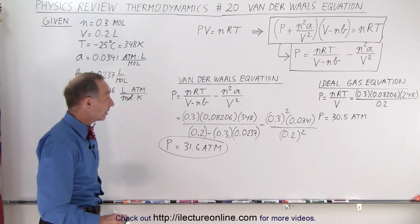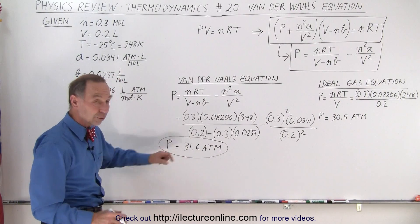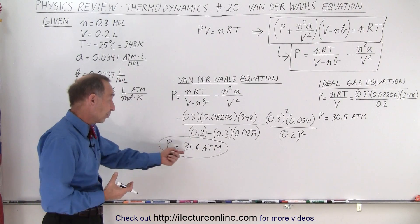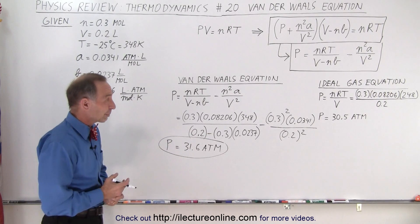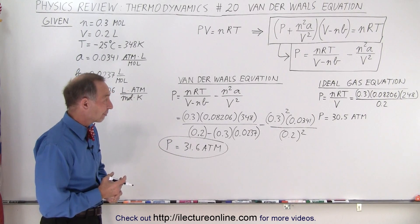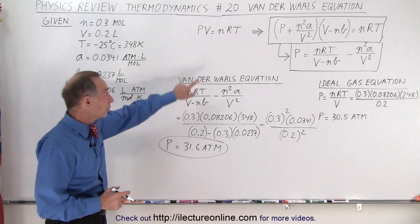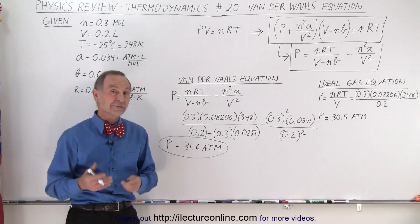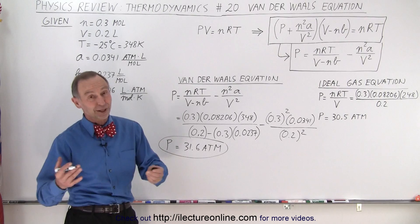And so you can see then that the pressure is increased due to those two factors, and it's 31.6 atmospheres. That's a high atmospheric pressure for a gas, and so therefore we expect it to be a little bigger using a more realistic equation called the Van der Waals equation. And that is how it's done.